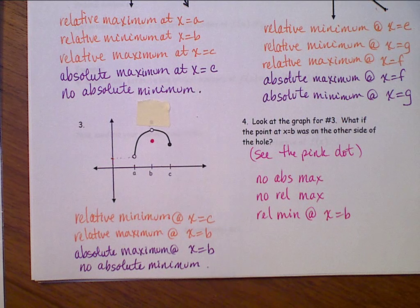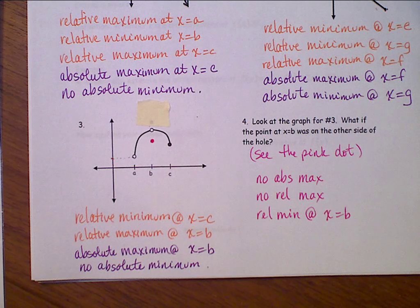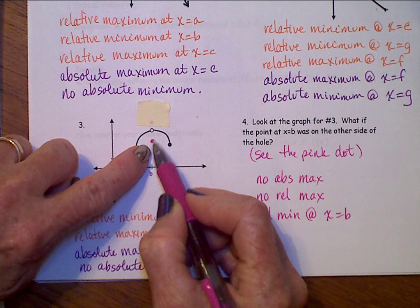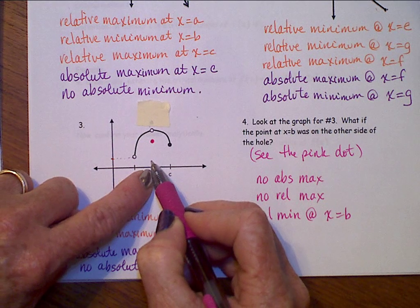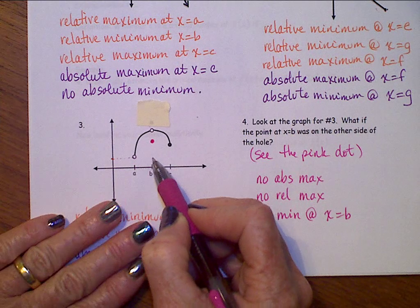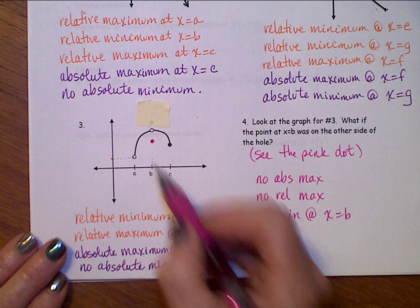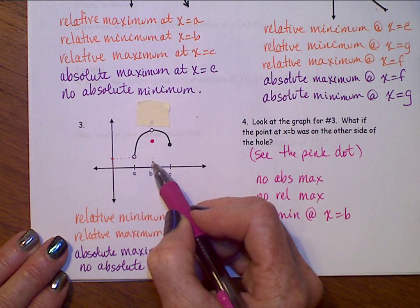And absolute minimum doesn't change. However, if I had taken that point, and instead of putting it up in here, what if I put that point at b way down here? Then we would have an absolute minimum value at x equals b. Again, at that point, instead of putting it up here, if I put it way down here, then we would have an absolute minimum at b.